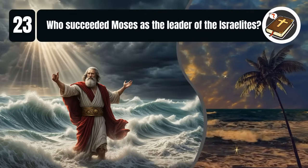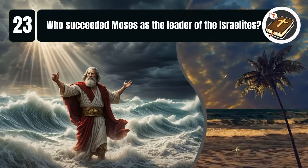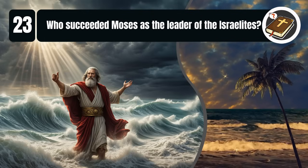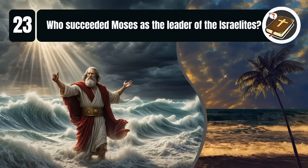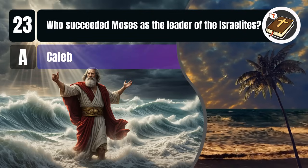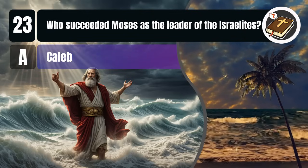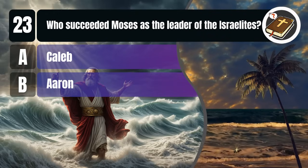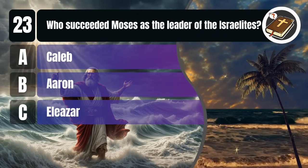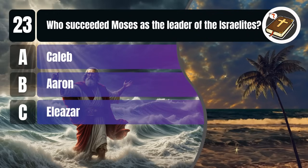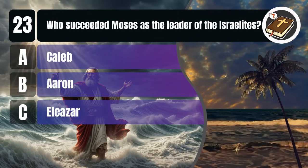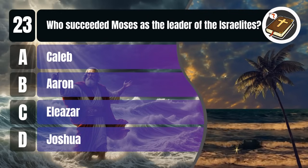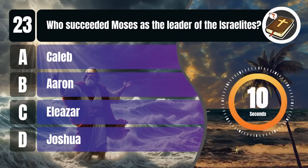Question 23. Who succeeded Moses as the leader of the Israelites? A. Caleb, B. Aaron, C. Eliezer, D. Joshua. You get 10 seconds.